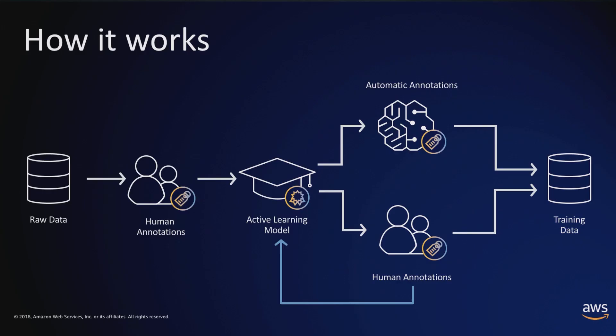Here's how the workflow works: you load your data into S3, which kicks off a job with human annotators who provide labels for those images. You can optionally enable active learning. If you do, that uses a machine learning model to label your data — and if you're skeptical about that, your concerns will be assuaged when you realize it's significantly cheaper. You can save up to 70% of your costs by utilizing active learning.